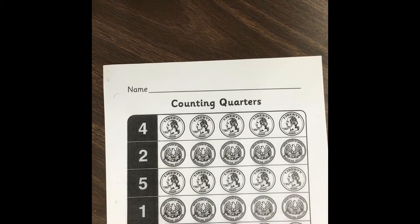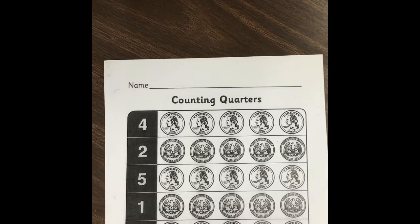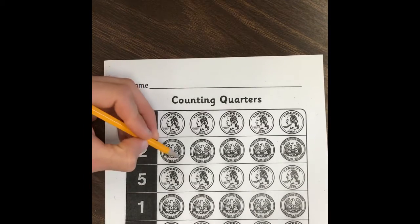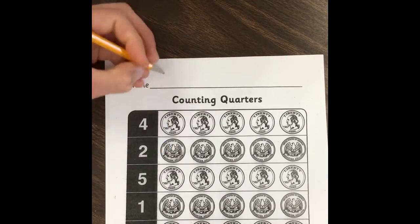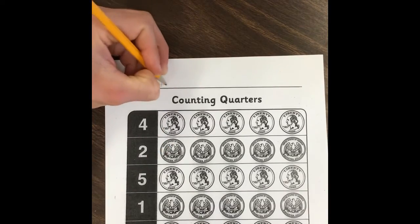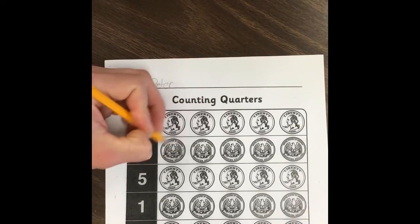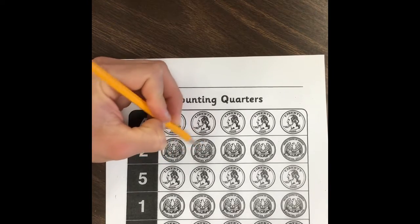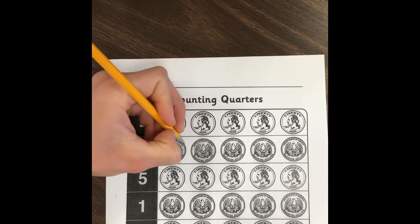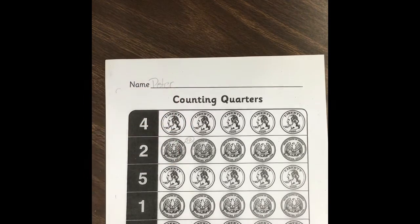Counting quarters: look at the number before each row of quarters and color that number of quarters. Write your names. Let's do this one real quick — two. We're going to color one quarter, two quarters. Bonus points if you can tell me how many cents that is. Pause the video here and keep on going at your own pace at home.